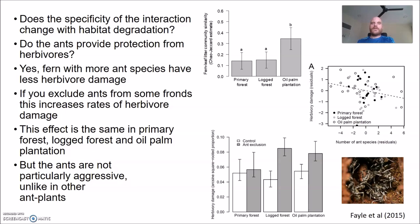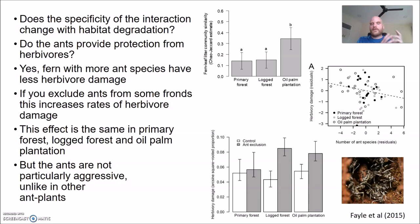We can also ask whether ants provide protection from herbivorous insects. With herbivory damage on the y-axis and number of ant species on the x-axis, as you have more ant species you have less herbivory damage — and that's true across all different habitats. Similarly, when we excluded ants from some fronds, those fronds tended to have more herbivory relative to fronds where ants weren't excluded, and this effect was the same in primary forest, logged forest, and oil palm plantation. Interestingly though, these ants are not particularly aggressive compared to ants in other ant plants.